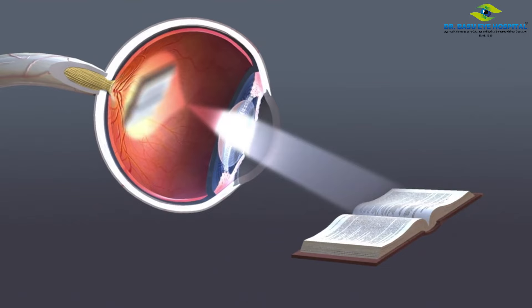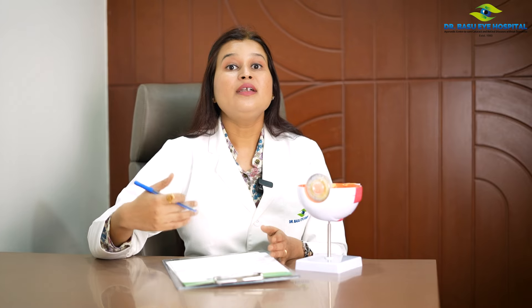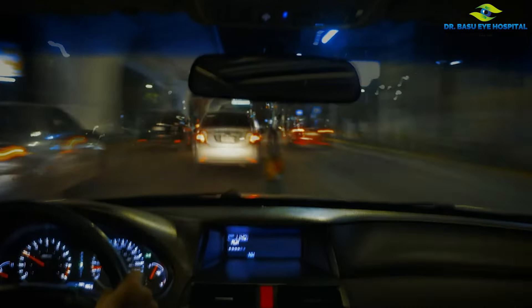Lens की flexibility कम होने की वज़ह से lens पे opacity settle होना शुरू हो जाती है, और इसी बढ़ती opacity की वज़ह से cataract development शुरू हो जाता है. Developing cataract के symptoms में patient को blurriness of vision और vision की clarity में कमी आती है. रात में drive करते समय सामने से आने वाली गाड़ियों की headlight से patient को तकलीफ होती है.